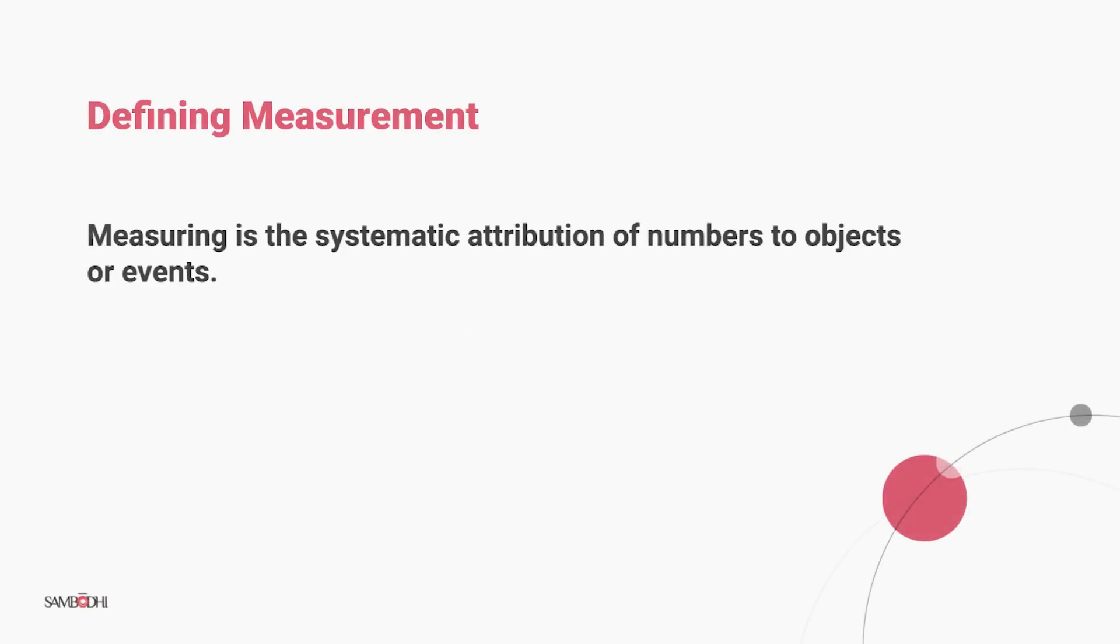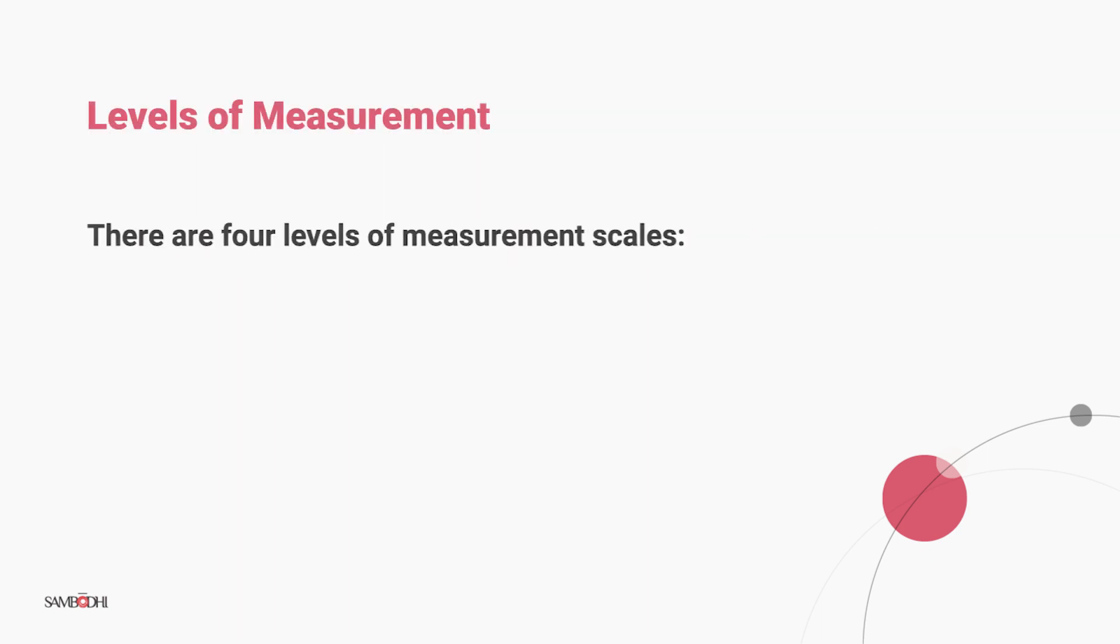Measurement is the systematic attribution of numbers to objects or events. There are four levels of measurement scales: nominal, ordinal, interval, and lastly, ratio.